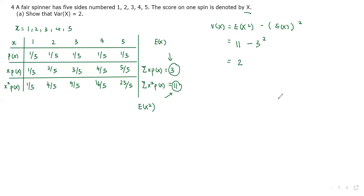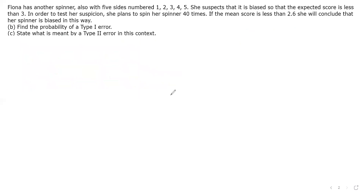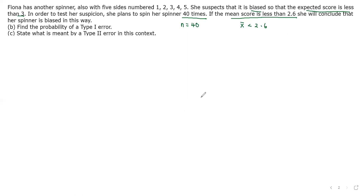Therefore, we show that the variance of x is 2. For part B, Fiona has another spinner with 5 sides. She suspects it is biased so that the expected score is less than 3. In order to test her suspicion, she plans to spin her spinner 40 times (n = 40). If the mean score x-bar is less than 2.6, she will conclude that her spinner is biased. We need to find the probability of a type 1 error.